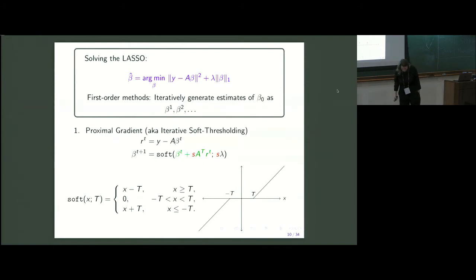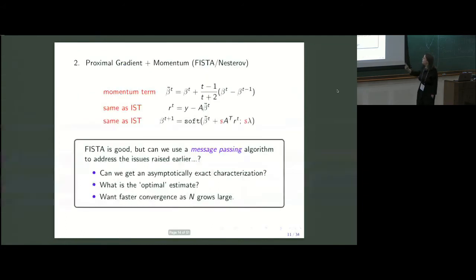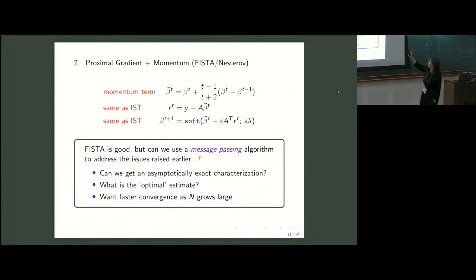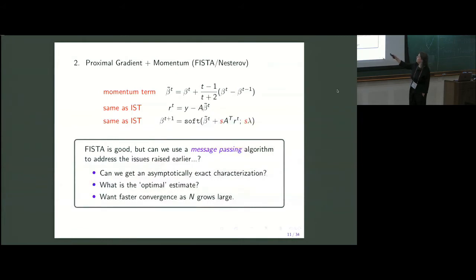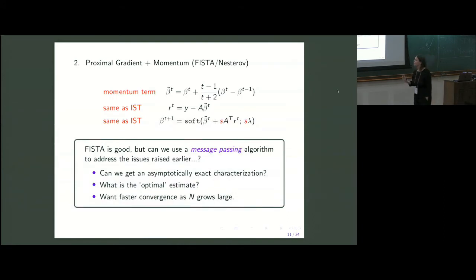Proximal gradient works, and we can speed up its convergence with a small tweak. Fast Iterative Soft Thresholding (FISTA) uses Nesterov's momentum idea: we calculate the residual not with the previous estimate but with a weighted combination of the previous two estimates. This has many of the same guarantees as proximal gradient but converges more quickly.